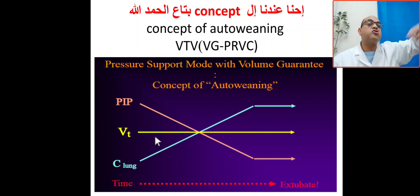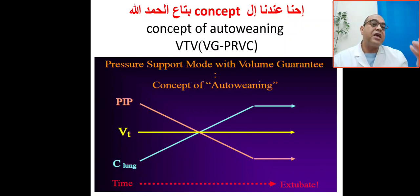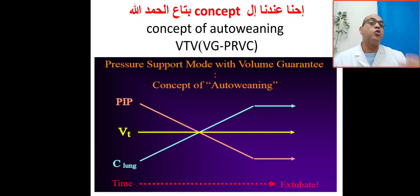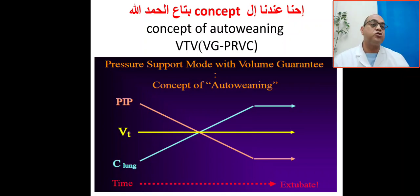Constant tidal volume will prevent volutrauma and ventilation-induced lung injury. It will prevent fluctuations in CO2 or gas exchange — no hypercapnia or hypocapnia. Because hypocapnia leads to decreased cerebral perfusion, which leads to ischemia, infarction, BVL, periventricular leukomalacia, and cerebral palsy, affecting neurodevelopmental outcome. Hypercapnia increases cerebral perfusion, leading to intraventricular hemorrhage. So constant tidal volume helps prevent VILI, volutrauma, and also reduces the incidence of BPD.